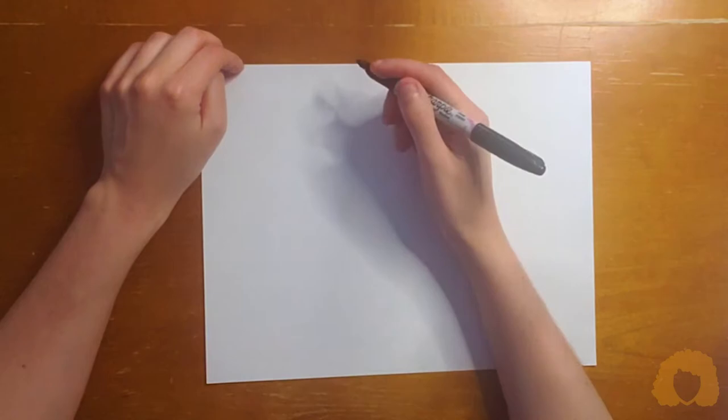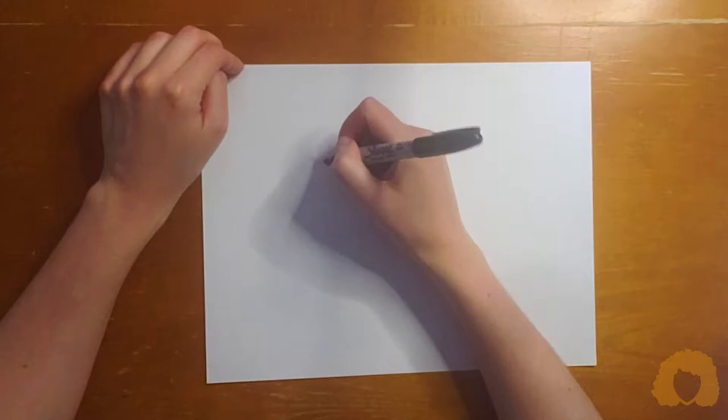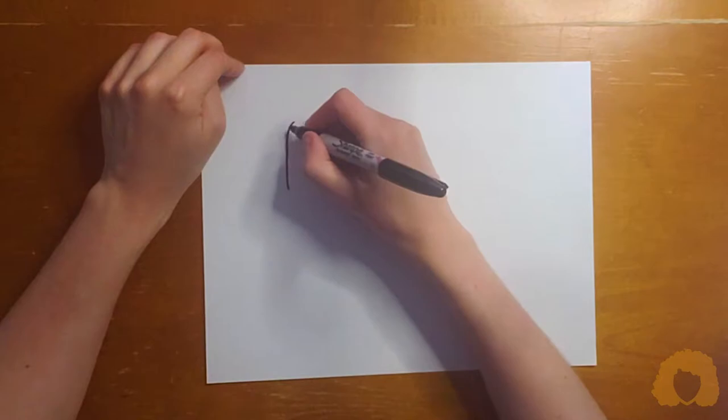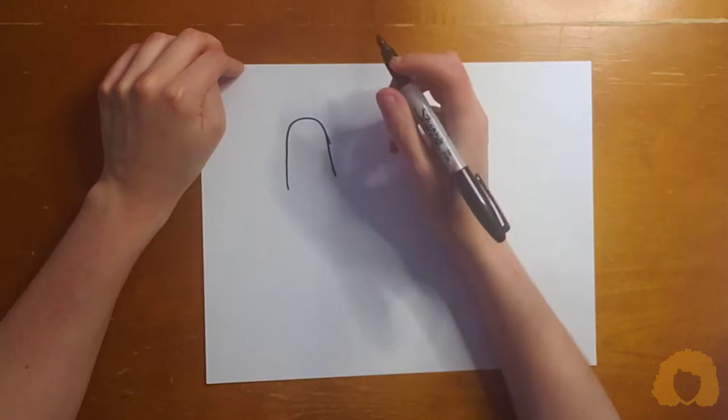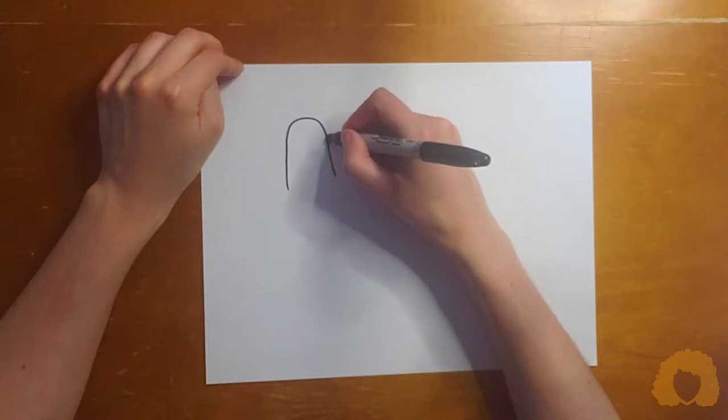For the first step of our griffin, we're going to choose what we want the head to look like. It might be as simple as a circle with a neck, or you can get more traditional and do what I like to call a ghost neck, which is going to allow me to make kind of an eagle-ish, traditional eagle griffin.